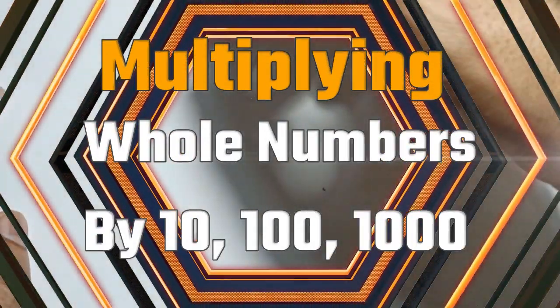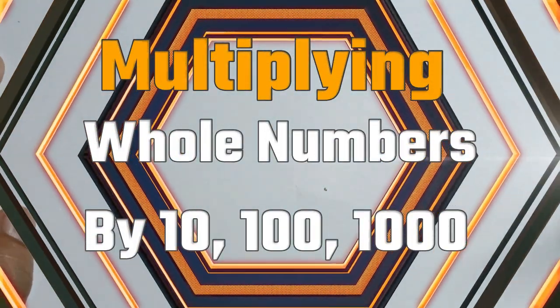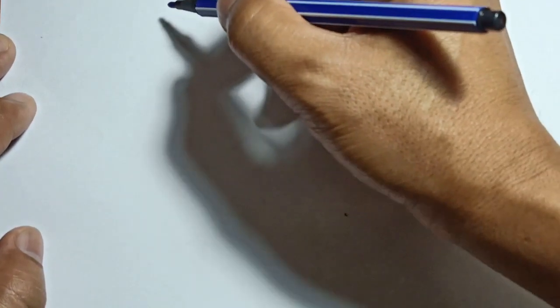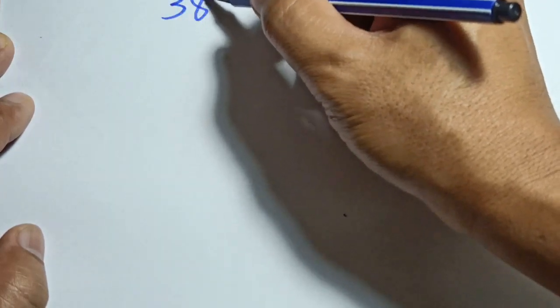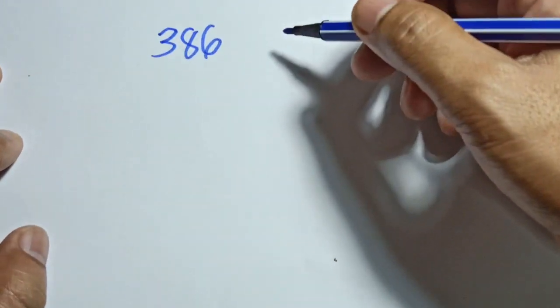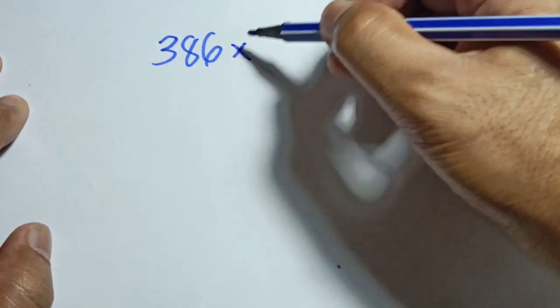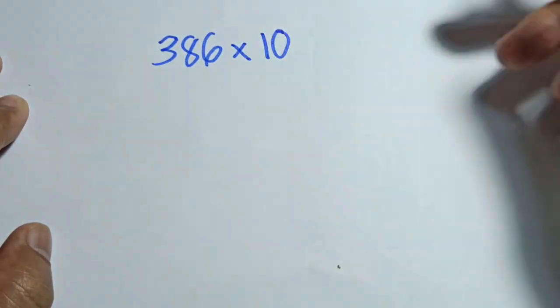Hi guys, this is teacher Mel and welcome back to my YouTube channel. Today we're going to learn how to multiply numbers by 10, 100, or 1000. For example, if we have 386 times 10.